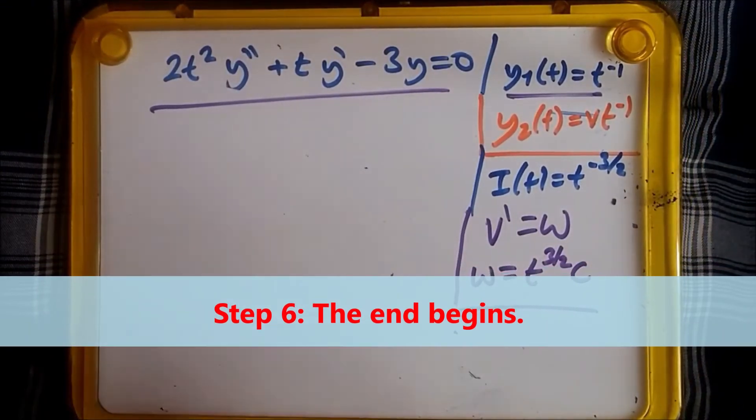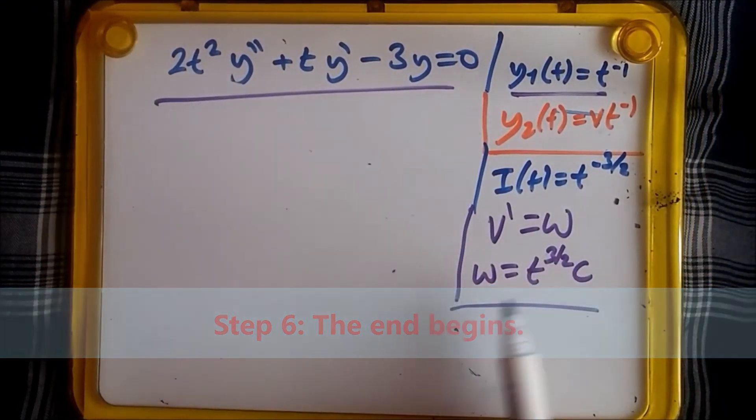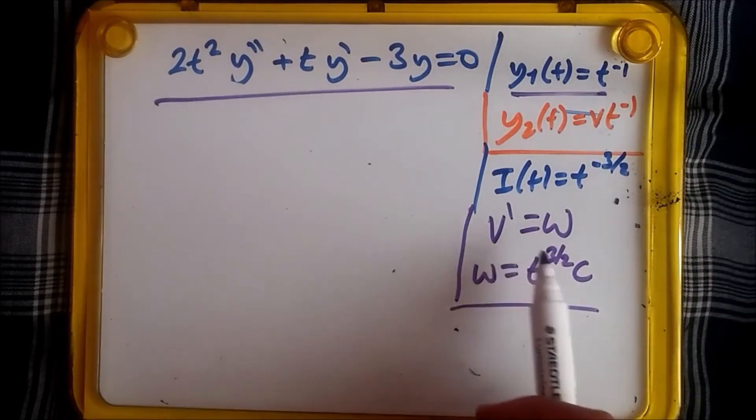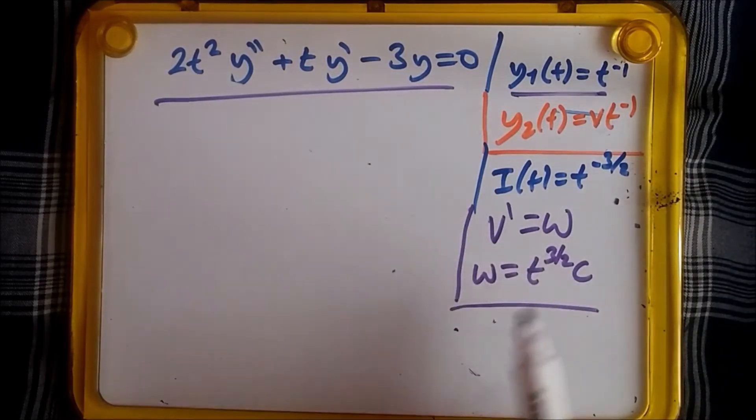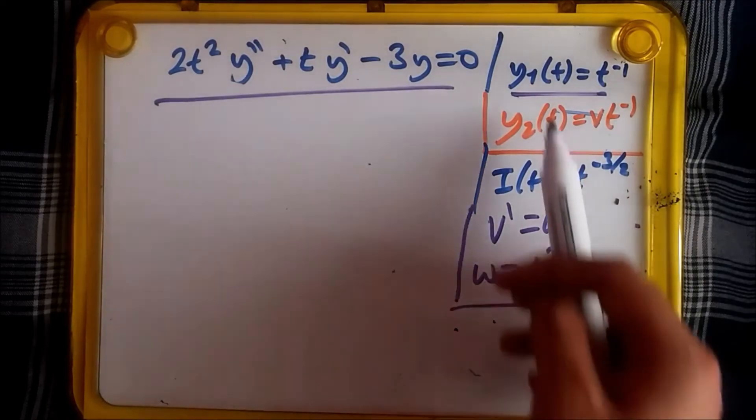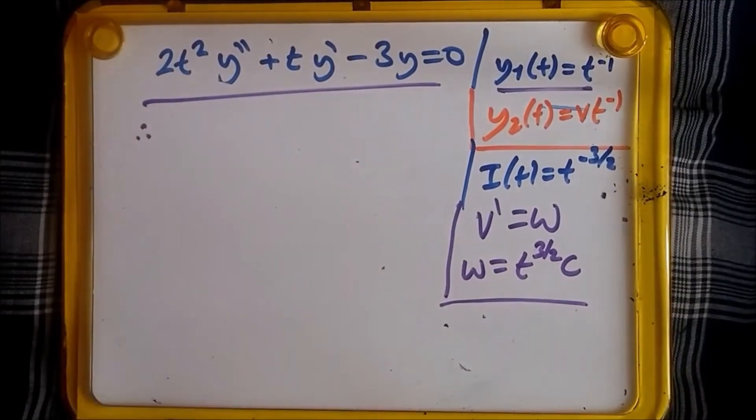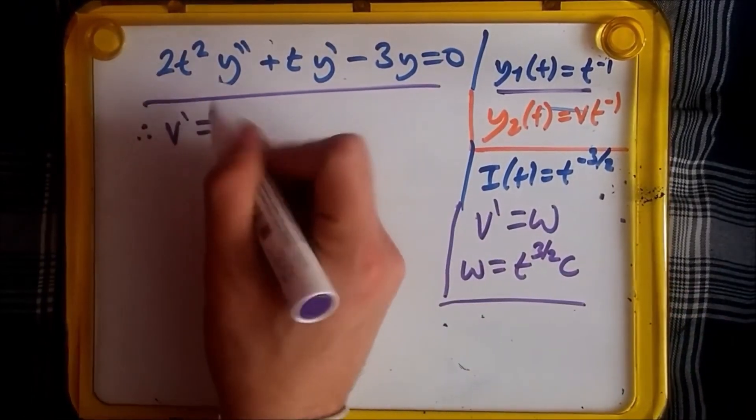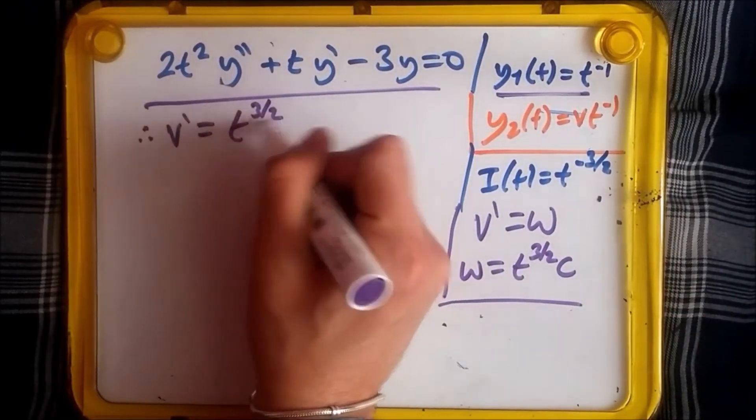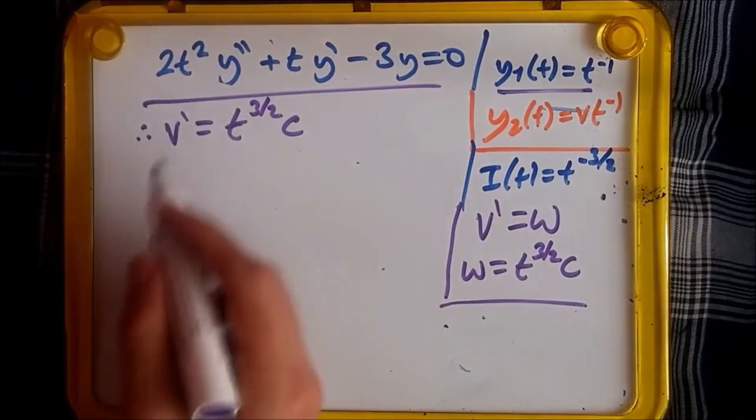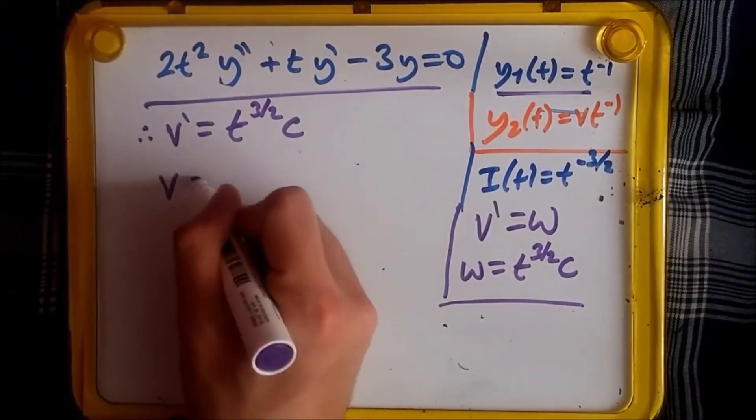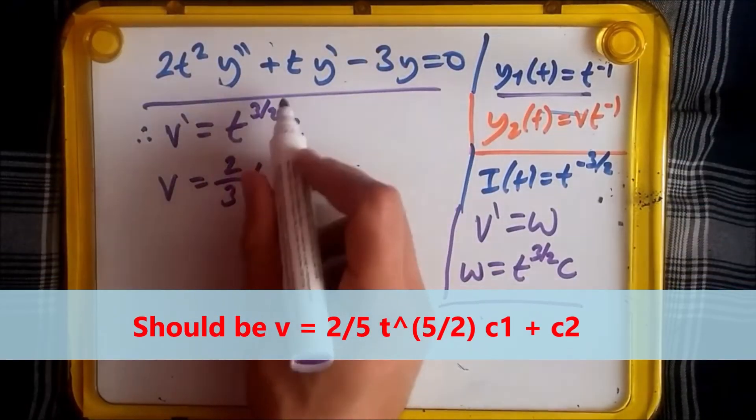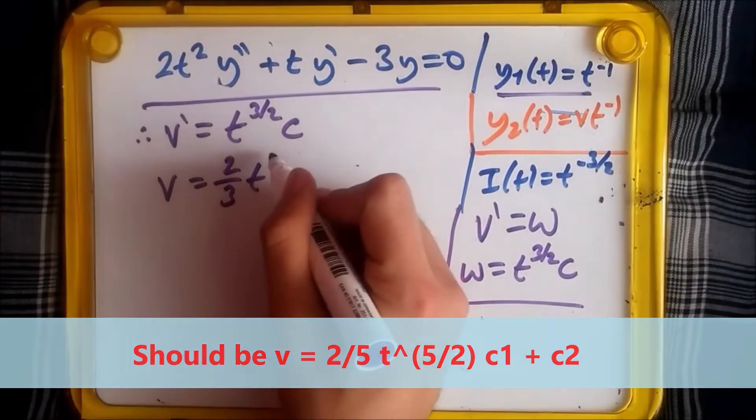Let's wrap this up. Now we have all these terms on the right. We have w equals t to the power 3 over 2 times c. v prime equals w, so now let's just plug everything back in and try to find the objective which was y2. Because w equals this term, plug into here. We have v prime equals t to the power 3 over 2 times c the constant. Integrating this to give us v, dropping the power down, we should have 2 over 3 t and increase the power by 1, which should give us 5 over 2 times c plus c2.